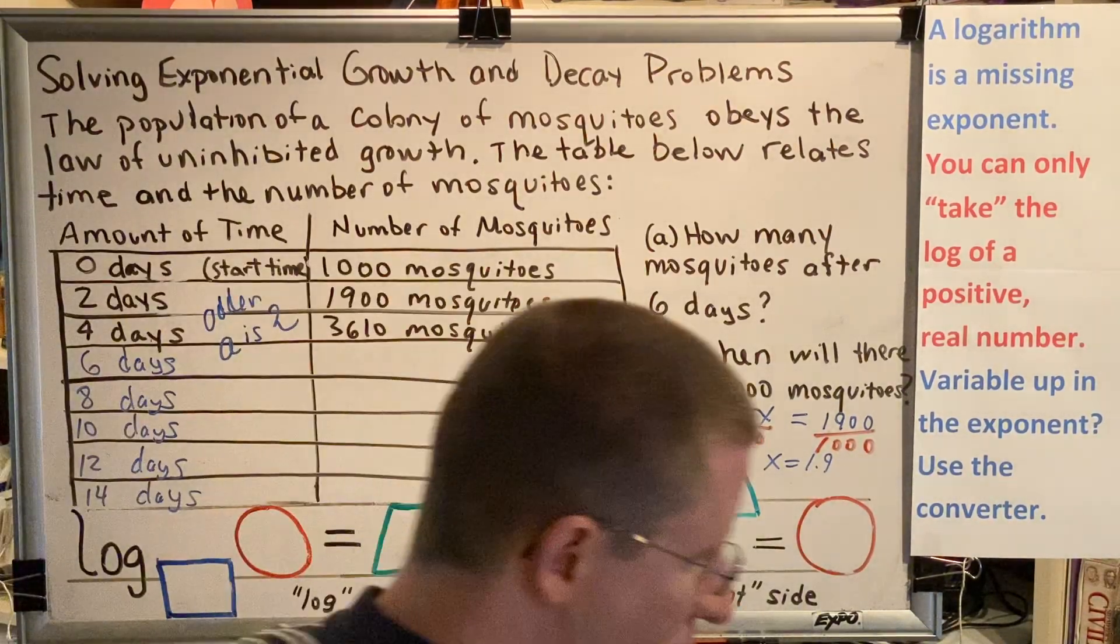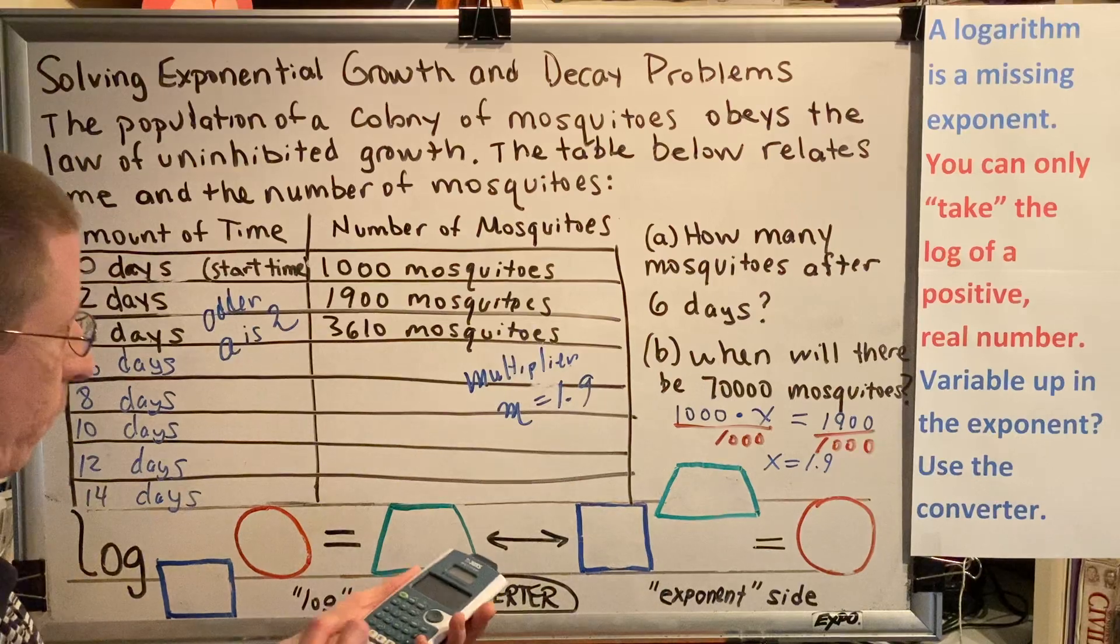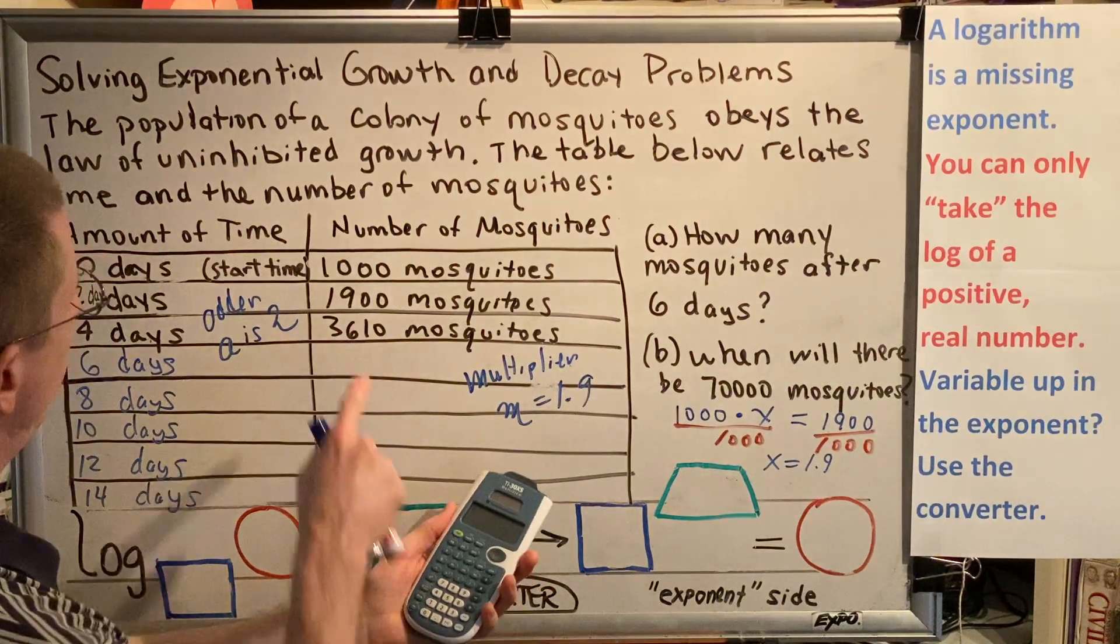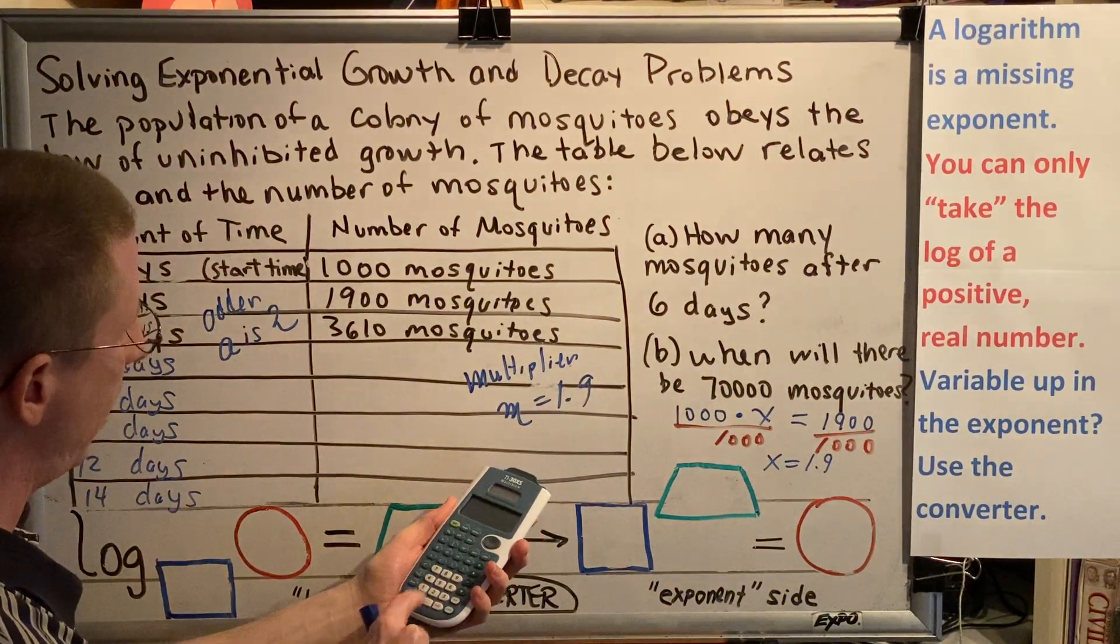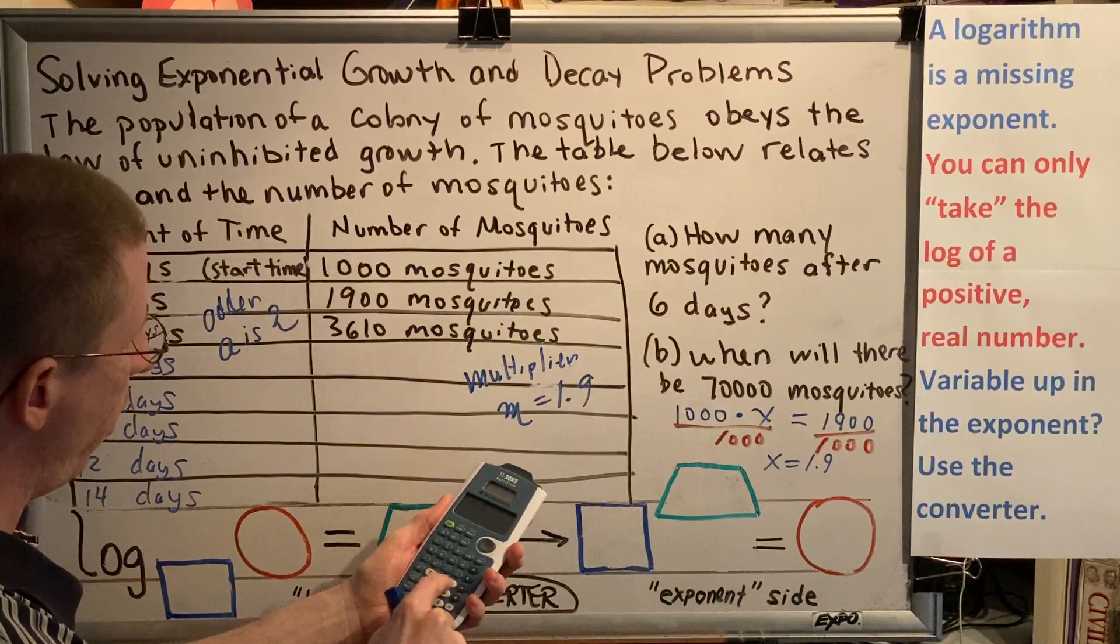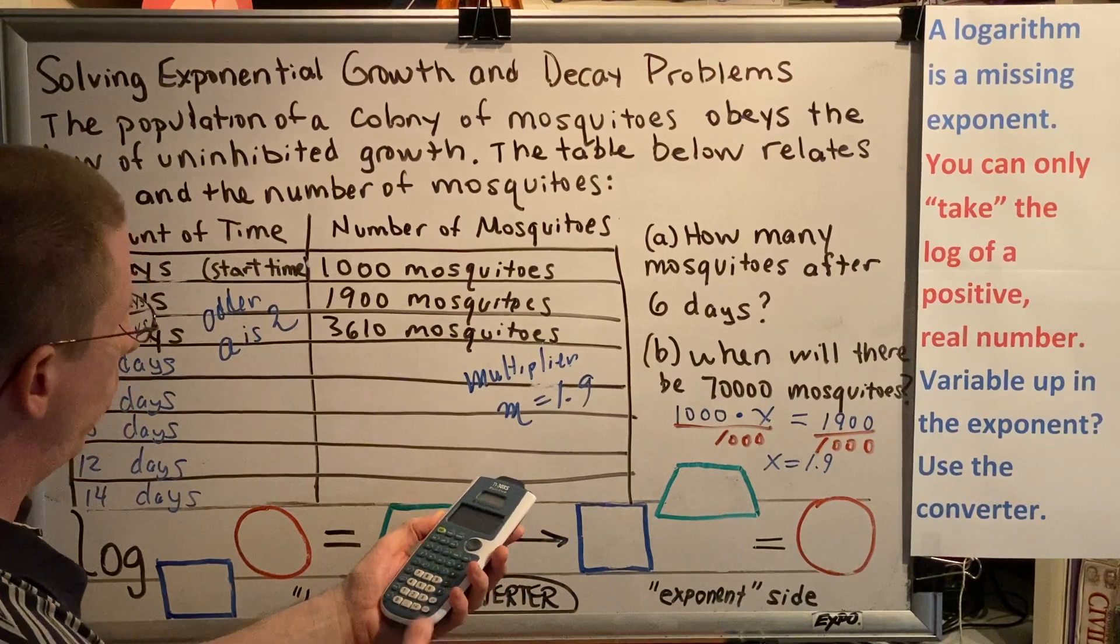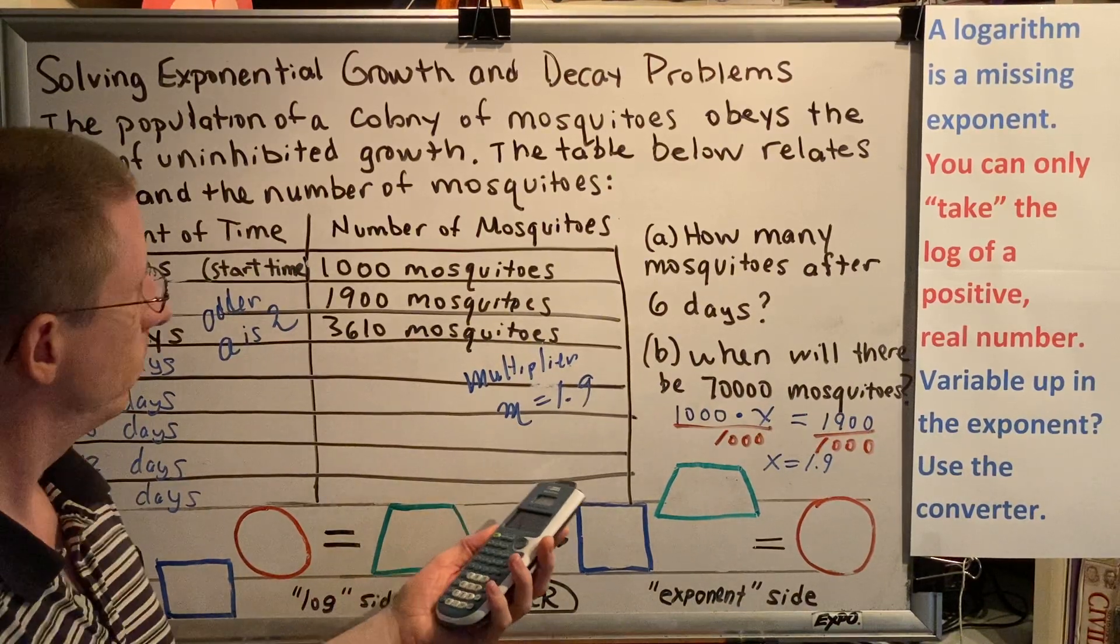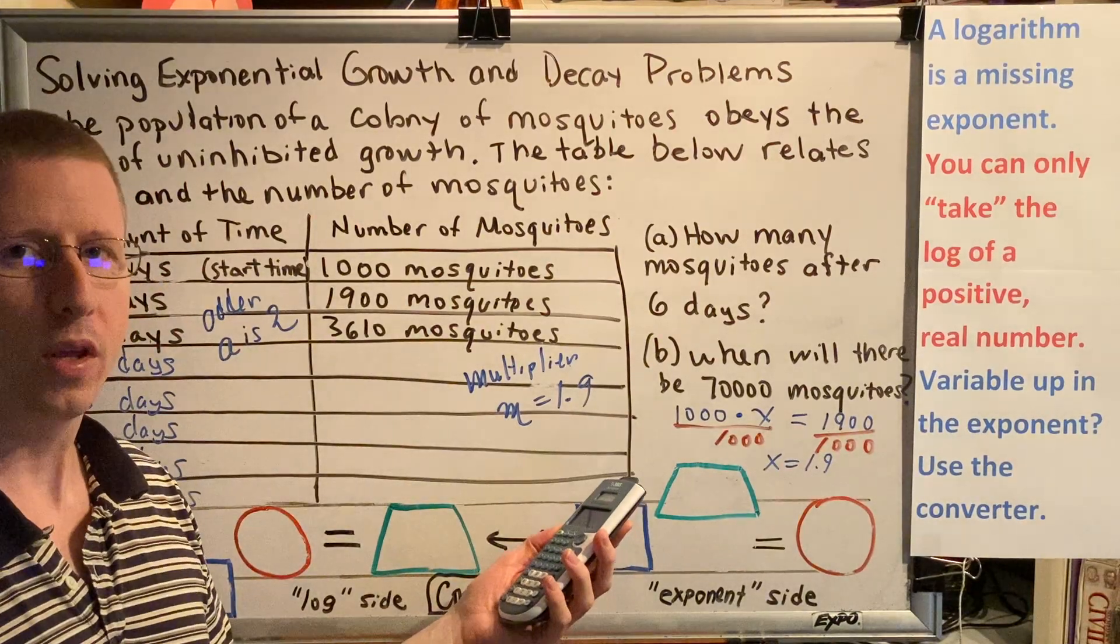And that will tell you your multiplier m. By the way, this works for all adjacent pairs of numbers. Everybody get out your calculators right now and do this: 3,610 divided by 1,900. What do you see? Go ahead, do it. What do you see?